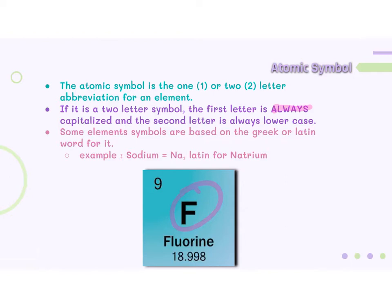In some elements, you'll notice that the symbol and the name don't match up. For example, in sodium, its symbol is Na, which is Latin for natrium. I will also want to point out that the element chlorine's atomic symbol is Cl. This is an L, not an I.